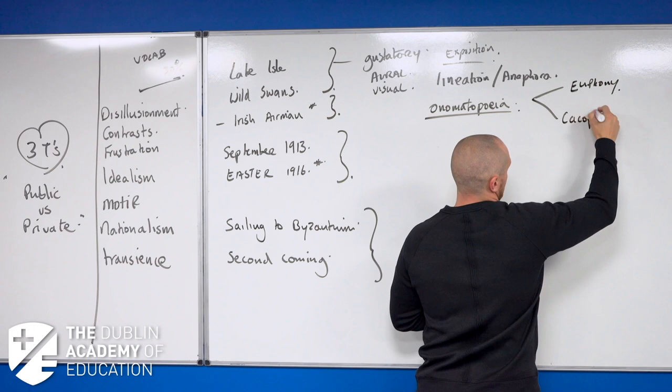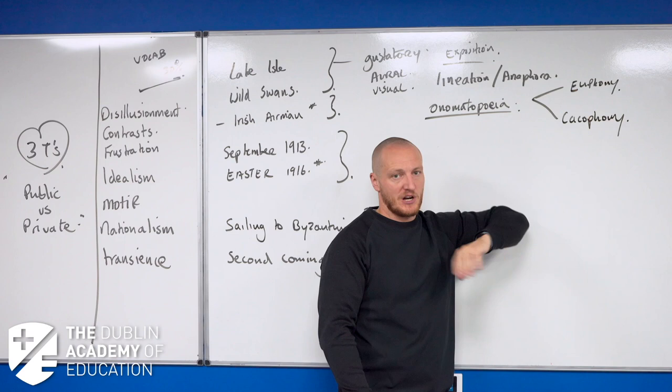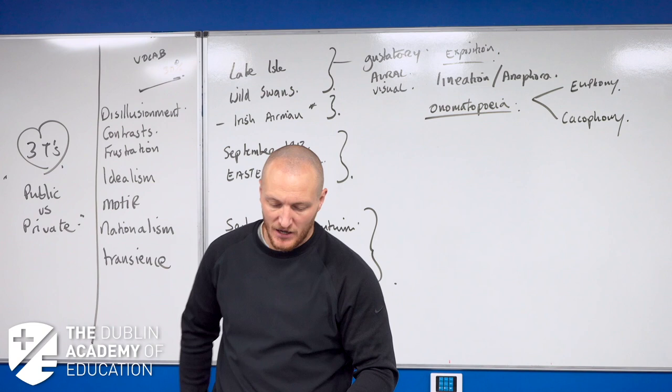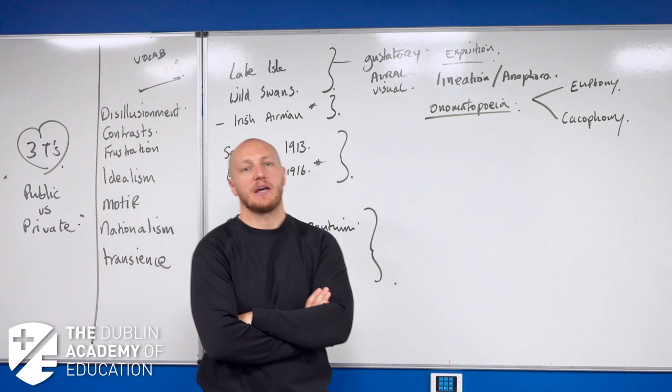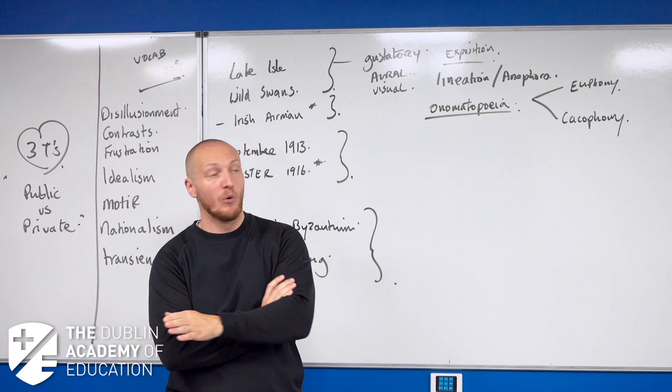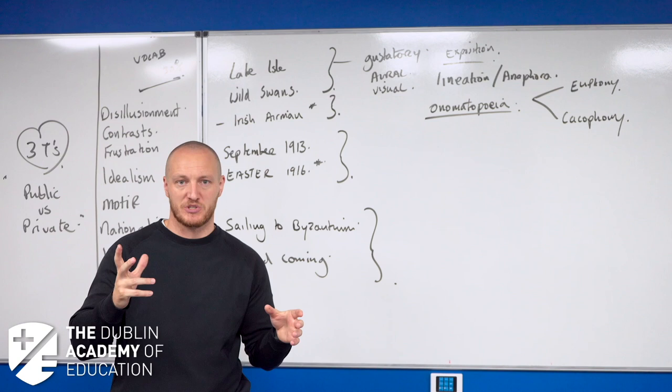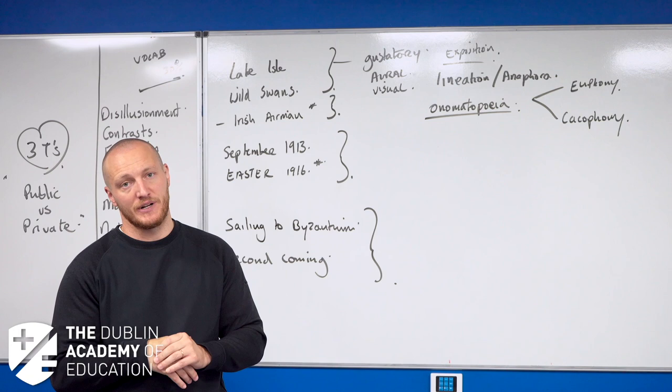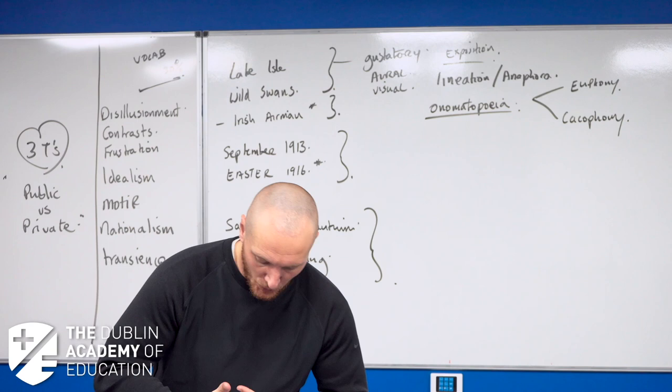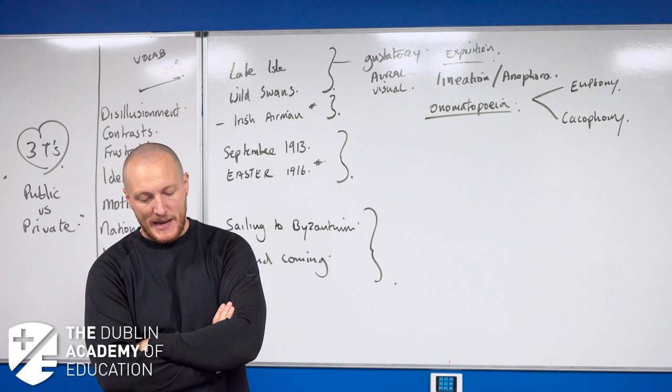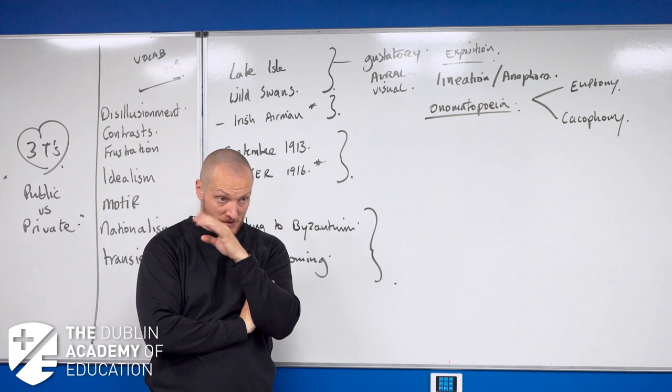There are two types of onomatopoeia: euphony and cacophony. Euphony is our soft noises and cacophony is our harsh noises. Here, 'I hear lake water lapping with low sounds by the shore'—the assonance of the A and indeed of the O is euphonious onomatopoeia. Again, how do I differentiate my paper from everyone else out of the 60,000-plus individuals sitting the Leaving Cert? You bring in terminology, you bring in little statements like that that other individuals aren't using. Euphonious onomatopoeia.